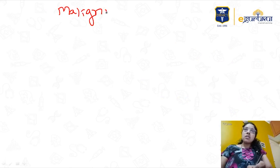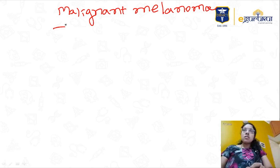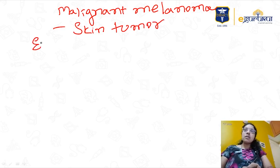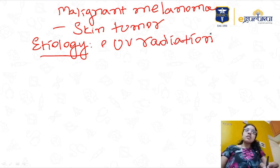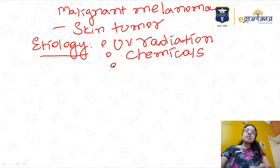We will see a few points regarding malignant melanoma, which is an important topic. Malignant melanoma is one of the important skin tumors. The etiology is mainly ultraviolet radiation exposure, chemicals, and there is also a genetic component.